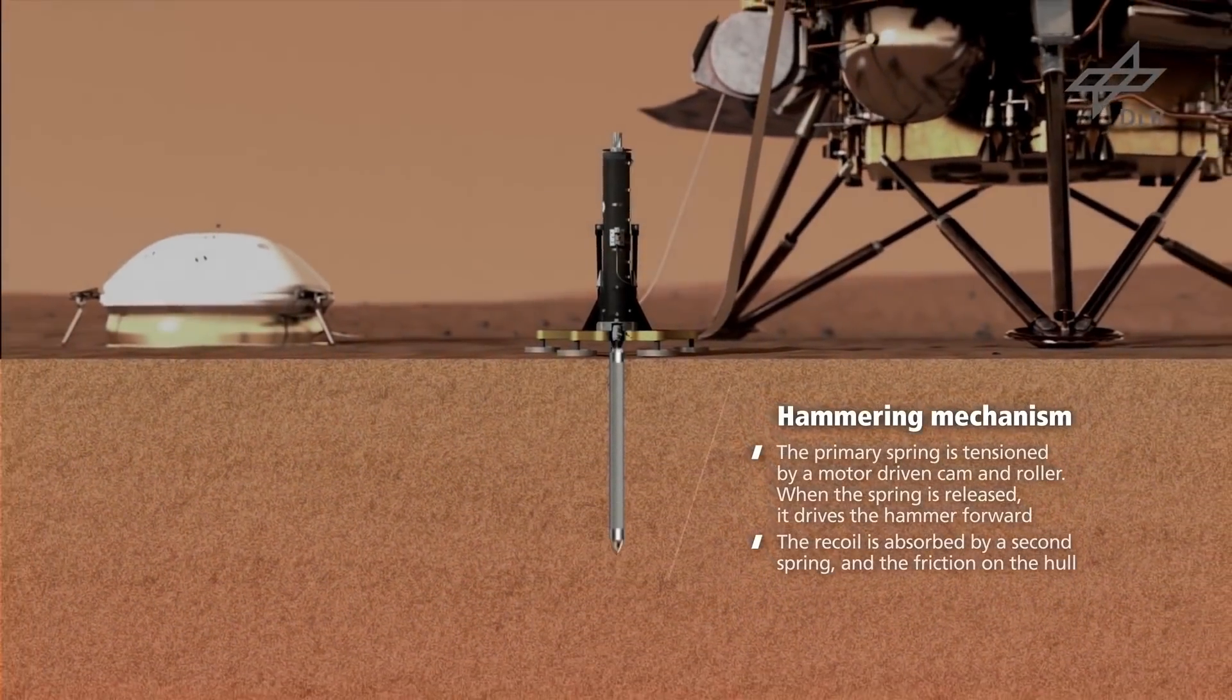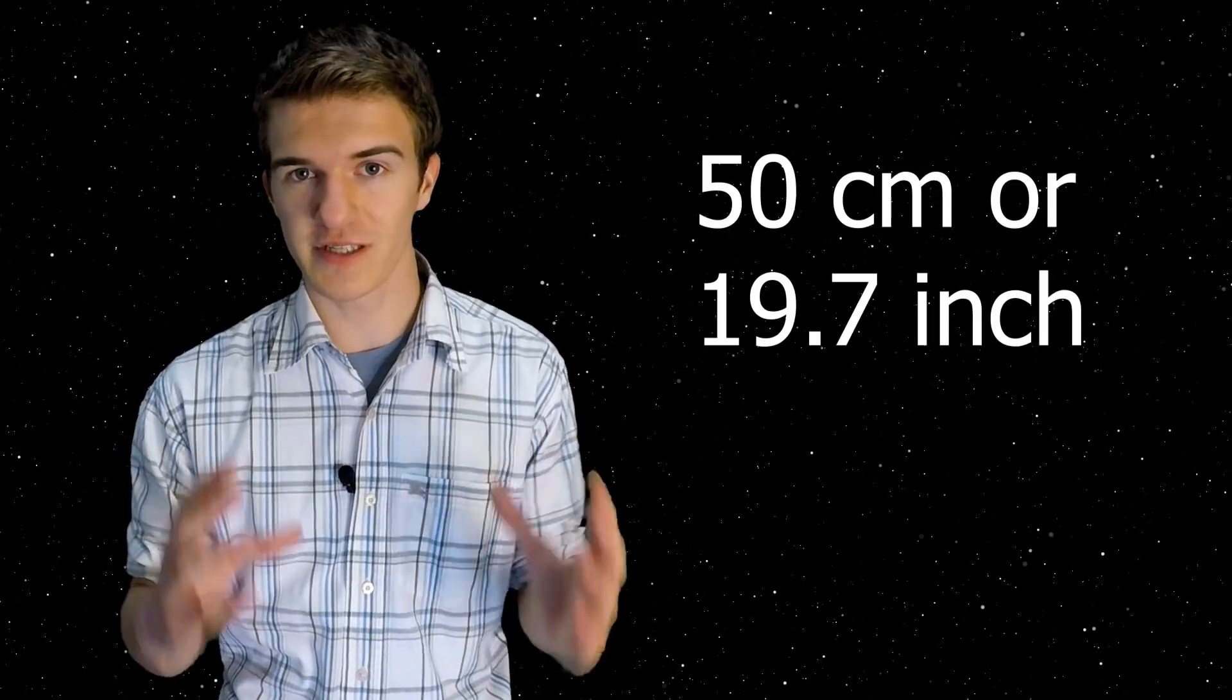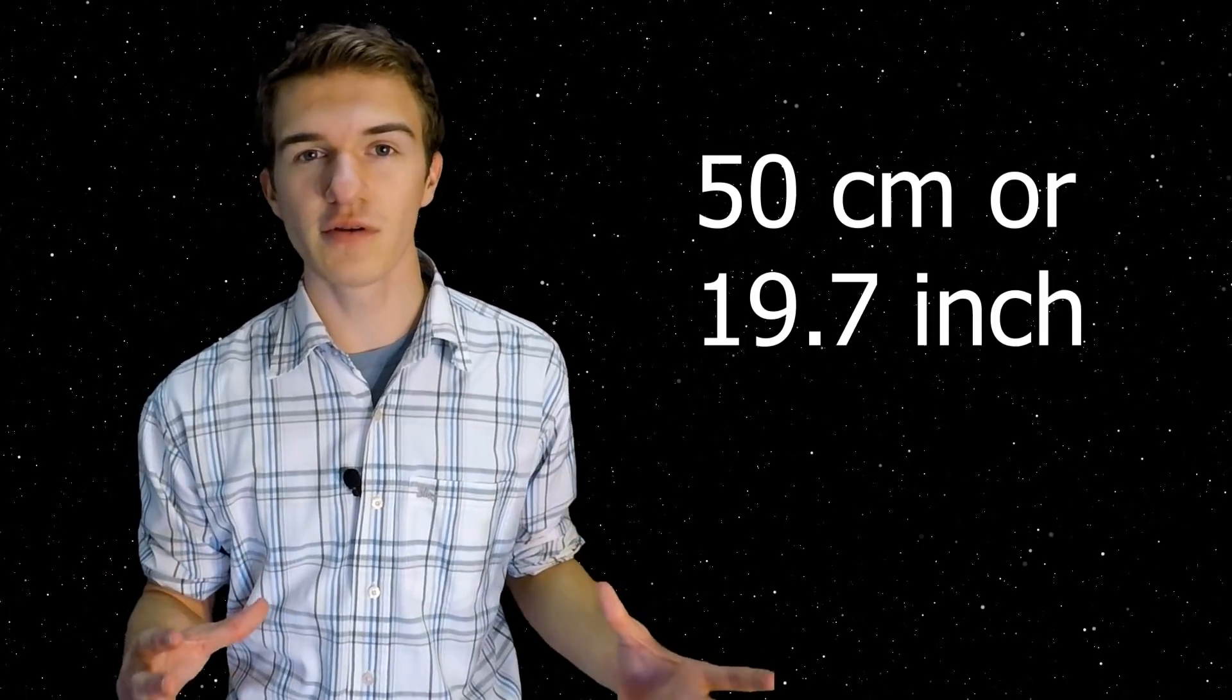As the probe actually digs through the surface, every 50 centimeters, it's going to be sending out a heat pulse. So it will stop for a little while, send out a heat pulse, and measure how the temperature varies over time. This will give them a better understanding of how exactly heat flows through the different compositions or different depths of the Martian regolith.